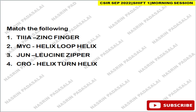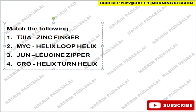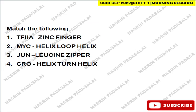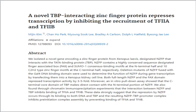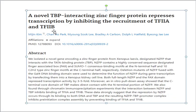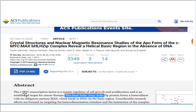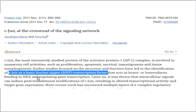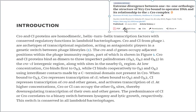The next question is about the structure of transcription factors. Transcription factor TFII has a zinc finger structure. MYC transcription factor has a helix-loop-helix structure. JUN transcription factor has a leucine zipper structure. The CRO transcription factor has a helix-turn-helix structure. These references are from published articles: zinc finger for TF2a, basic helix-loop-helix for c-MYC as a master regulator of cell growth, leucine zipper for c-JUN, and helix-turn-helix for CRO and CI proteins, which are homodimeric.